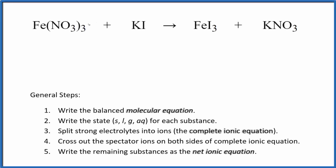In this video, we'll write the balanced net ionic equation for Fe(NO3)3 plus KI. This is iron(III) nitrate plus potassium iodide.